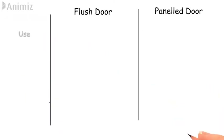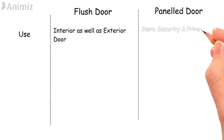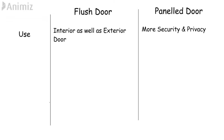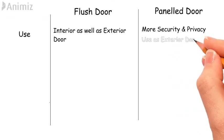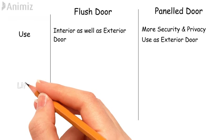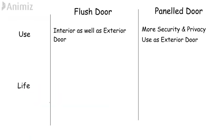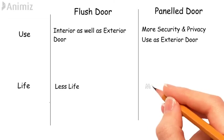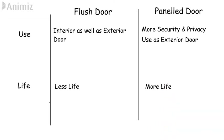Use: Flush door can be used as an interior as well as exterior door, whereas panel doors provide more security and privacy, hence they are generally used as exterior doors. Life: The life of a flush door is less than a panel door and depends on quality and type of door, whereas the life of a panel door is more than a flush door.